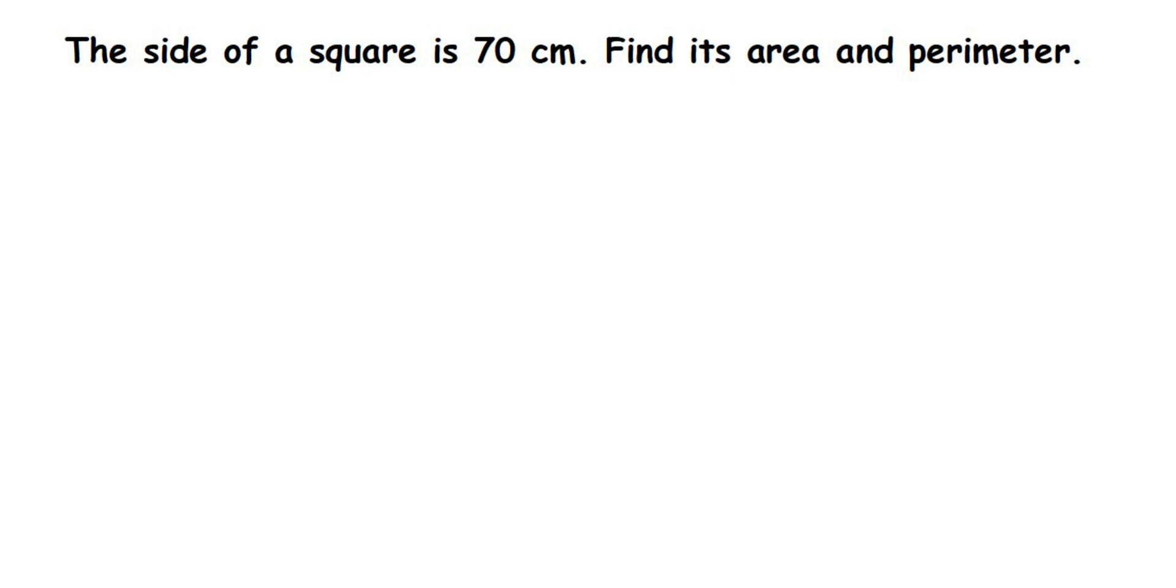Hey everyone, here's a question from squares and rectangles. The side of a square is 70 centimeters. Find its area and perimeter. This is a direct question where they have given the side of the square is 70 centimeters. We have to find out the area and perimeter, so we directly use a formula, substitute the value, and get the answer. This type of question you can expect for two marks.